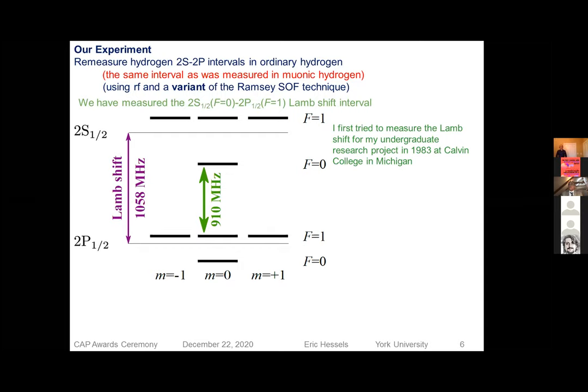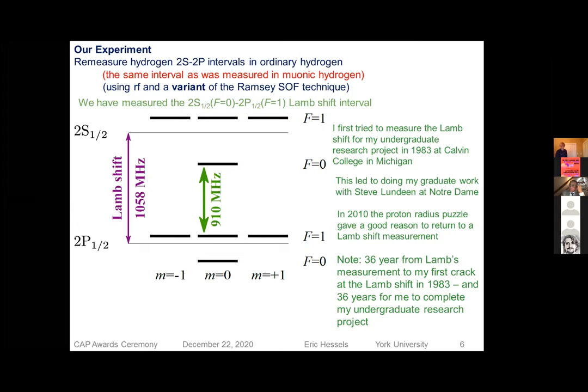I should tell you a little bit about my history with respect to the lambshift. I first tried to measure the lambshift when I was an undergraduate for my undergraduate research project. That was in 1983 at Calvin College. This led me to doing my graduate work with the person who had the most precise measurement of the lambshift, Steve Lundin at Notre Dame. We ended up not measuring the lambshift, but we did some other work there. And then in 2010, when this radius, proton radius problem came up, I decided to get back into the lambshift game. And I'd just like to note that it took me 36 years to finish my undergraduate research program. And last year, 36 years later, we finished it. It was 36 years from when Lamb first measured the lamb shift until when I started measuring the lamb shift. So my history of the lamb shift covers half of the history of the lamb shift.